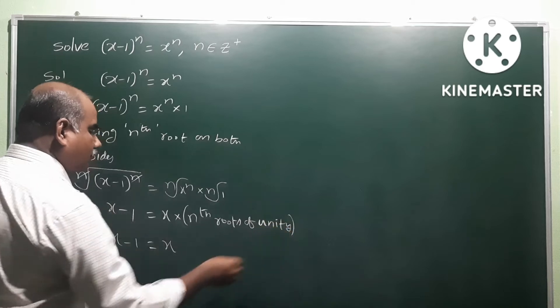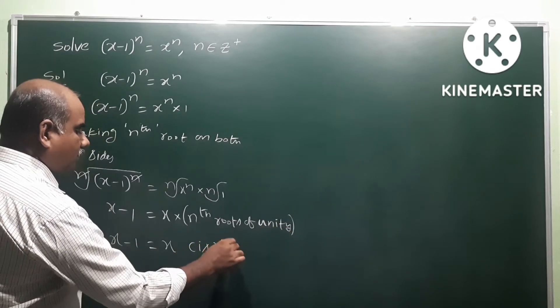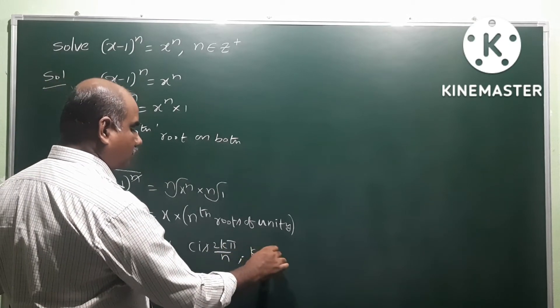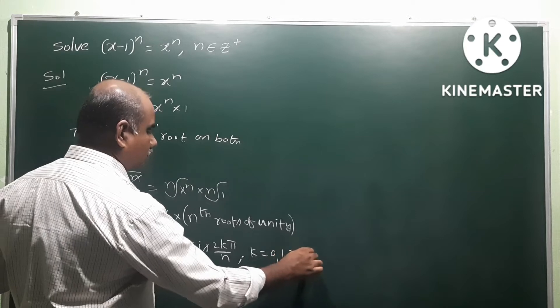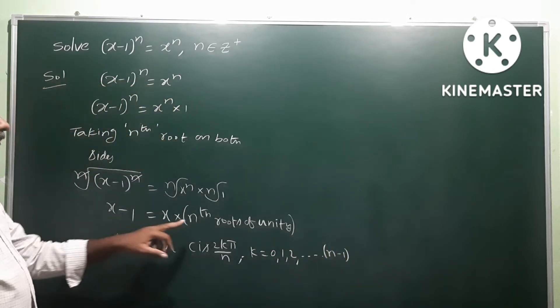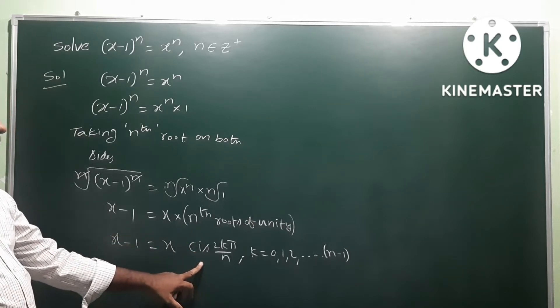The formula for nth root of unity is important: it equals e^(i·2kπ/n), where k = 0, 1, 2, and so on up to n-1. So nth roots of unity use the formula cis(2kπ/n).